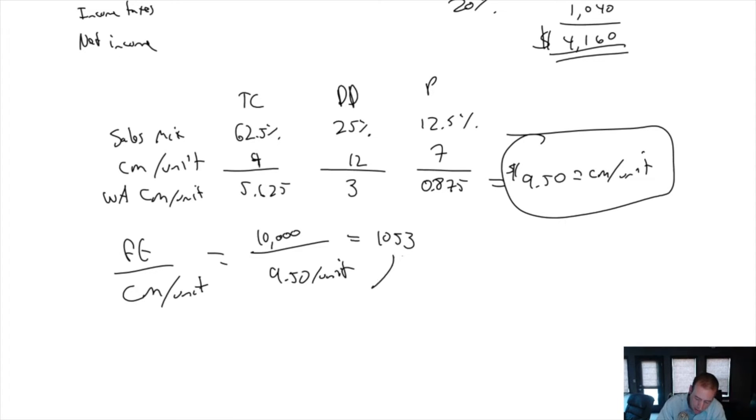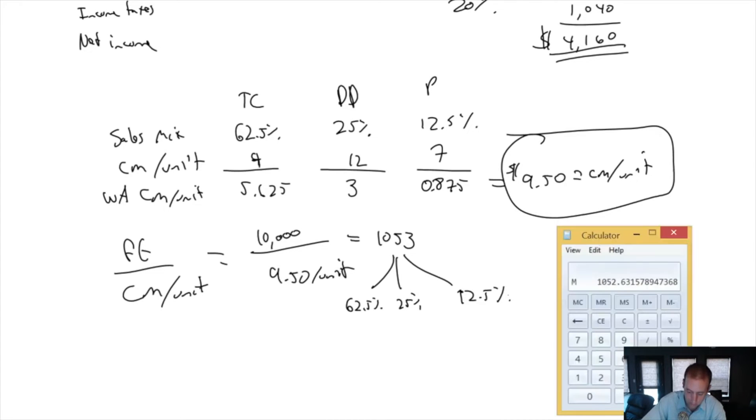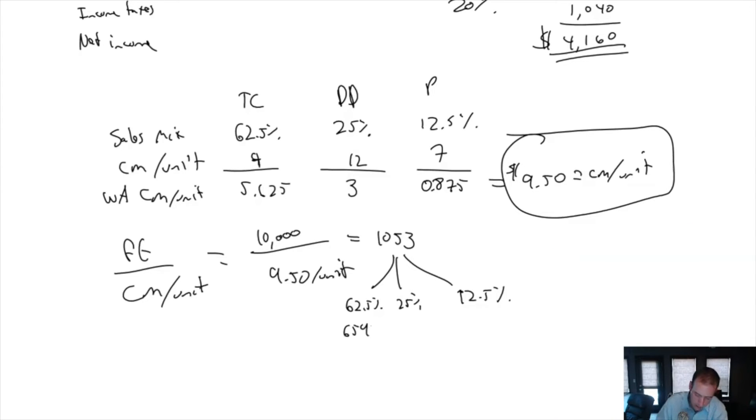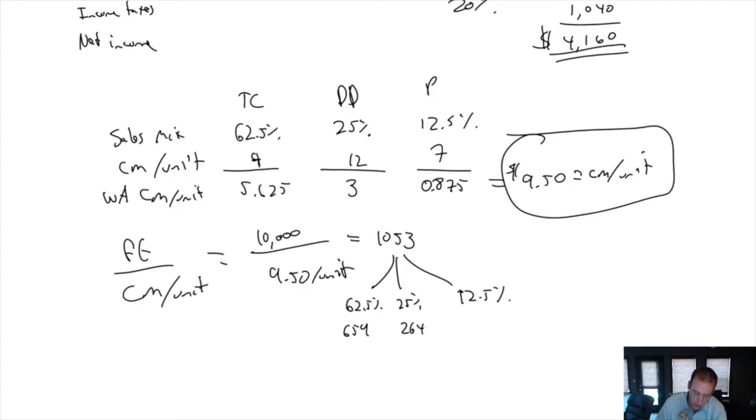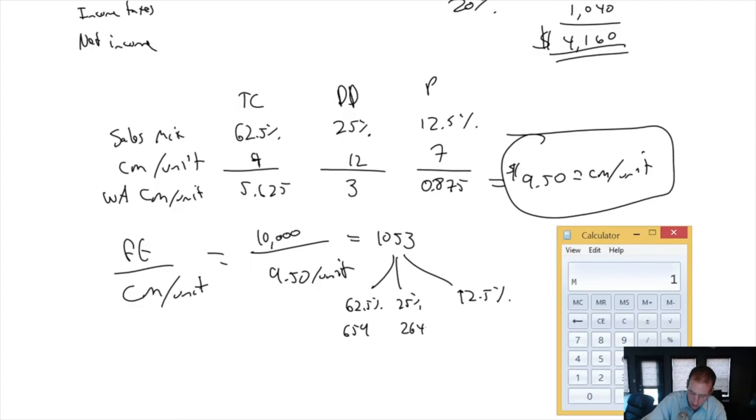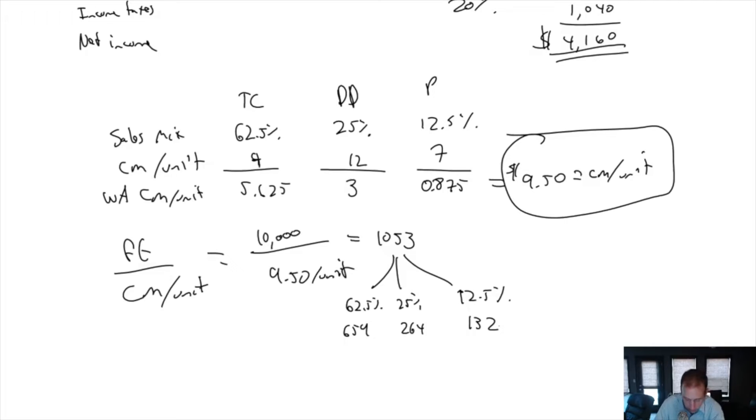But let's break it down. What would we expect these units to be made up of? Well, 62.5% are going to be thin crust, 25% deep dish, and 12.5% will be pasta dishes. So 1,053 times 0.625 is 659 thin crust pizzas need to be sold. 1,053 times 0.25, 264 deep dish pizzas need to be sold. And 1,053 times 0.125, 132 pasta bowls need to be sold.